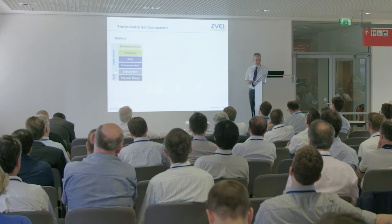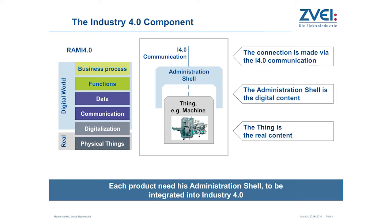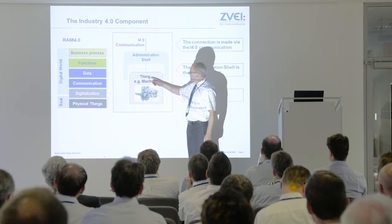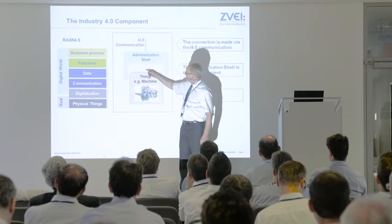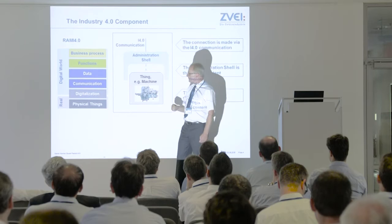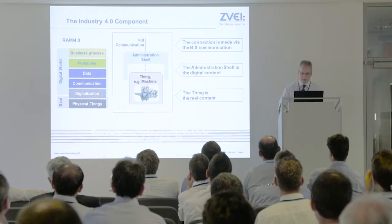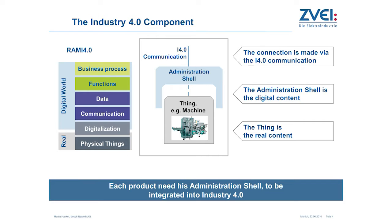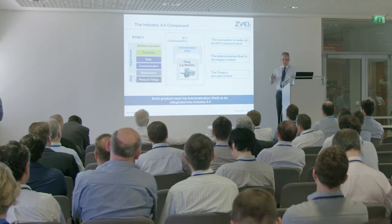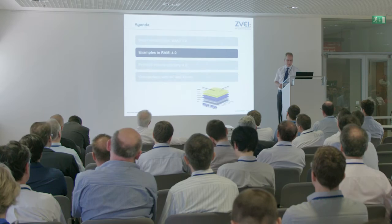The second thing we have done is the Industry 4.0 component — a mapping of the RAMI to a real product. A thing could be a machine or a servo motor. Each thing exists in the physical area, and with digitalization through the integration layer and the administration shell, the digital world of the thing — all the data, functions, and business processes — is inside this shell. In the future, in the Industry 4.0 network, we need an administration shell for each thing to bring it into the network.